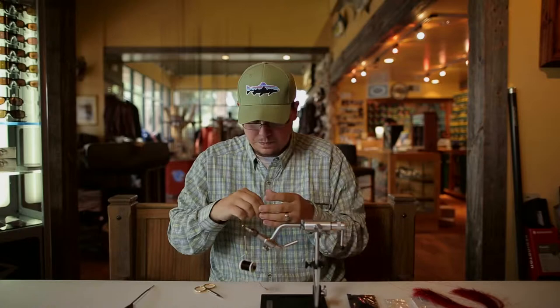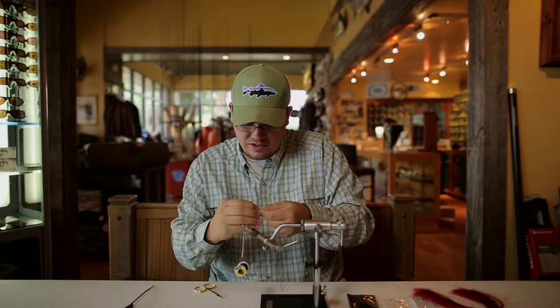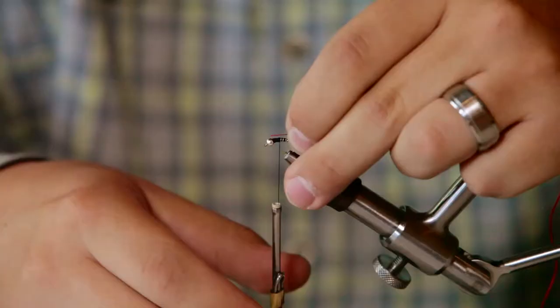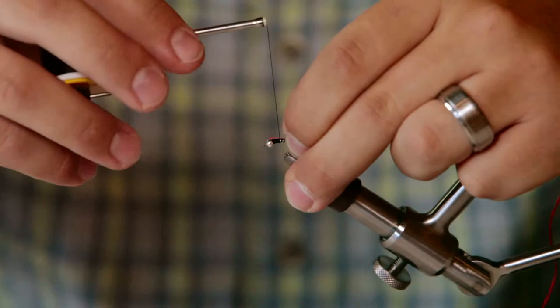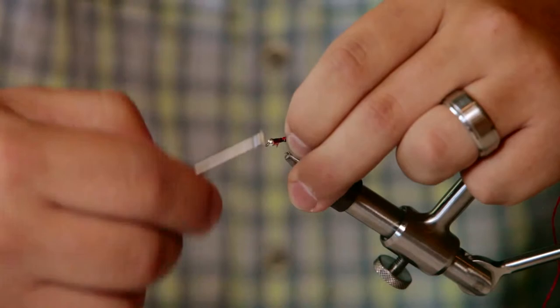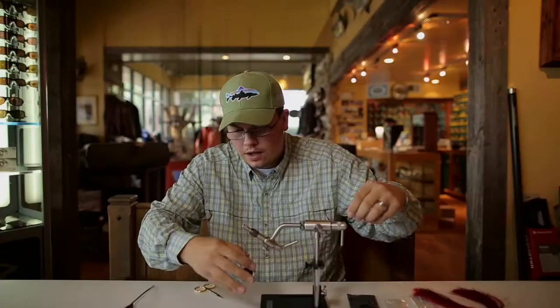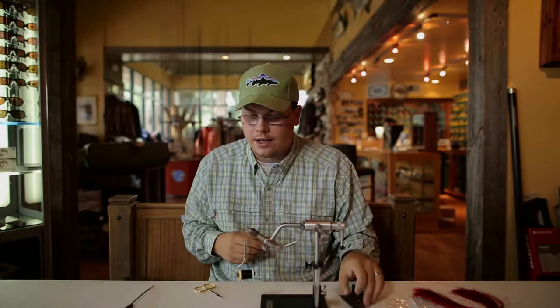So I like to take the tip of it, moisten the tip of my fingers, and make sure that that floss isn't going to go anywhere. And I take it and tie it right in at the top of the thorax. One solid wrap, come back, cover that up as best I can, and now my wing case is tied in.